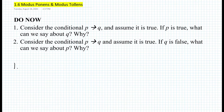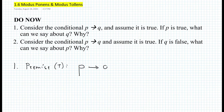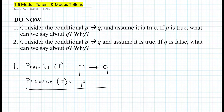It says here that the conditional statement if P then Q is true and also P is true. When we are given statements that are true, remember that these are called premises. So we have our first premise, which is true — that's the conditional statement if P then Q. And as the second given, which is also a premise, we're given that P is true as well. So let me draw a line here, and we know that the conclusion must be true as well. Let me use a different color.